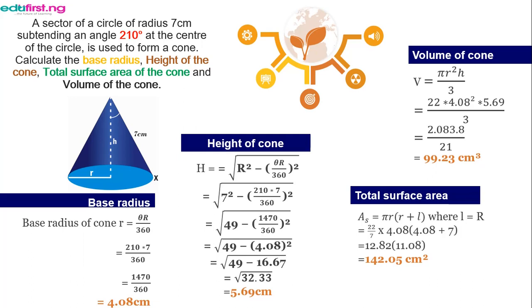The volume of a cone is given as πr²h over 3 or 1 over 3 multiplied by πr²h. Substituting the values of π, r and h, we have π to be 22 over 7, r to be 4.06 and h to be 5.69 as gotten from our previous step. So, when you do the math, we would have volume of cone as 99.23 cm³. Please ensure to take your time out and do the math on your own so that you would understand the processes very well.